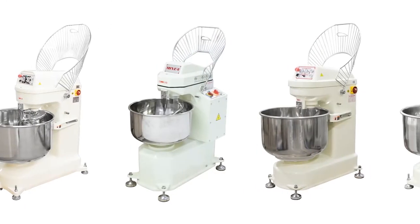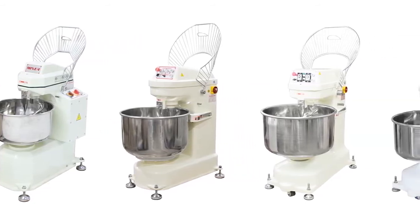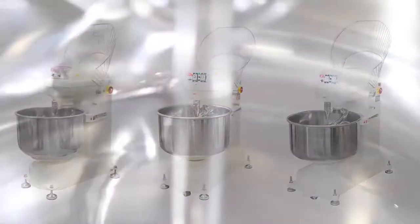Spiral mixers are known in the food service industry as the gold standard for mixing dough. With both the bowl and the dough hook rotating at the same time, the hook can spin more slowly, keeping the dough cooler and preventing overdevelopment.